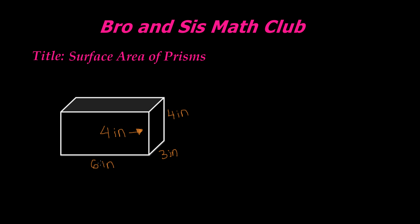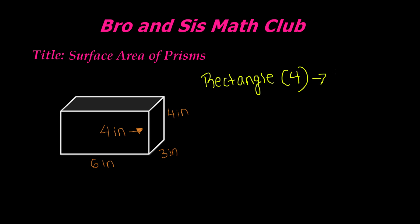4 times 6 is 24 inches. So that means the area of this rectangle is 24 inches squared. This rectangle, which there are four of these, has an area of 24 inches squared.